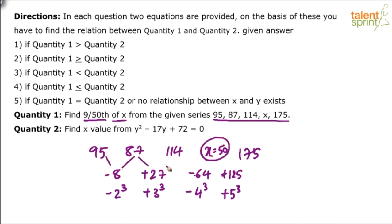Are you able to follow? This is what is happening here: 95 minus 8, 87 plus 27, 114 minus 64, and 50 plus 125. So x is 50. But he says quantity 1 is 9/50th of x. So quantity 1 will be equal to 9 by 50 into x, which is 50 itself. So it will be equal to 9. Quantity 1 is 9. Now find out quantity 2 and compare.